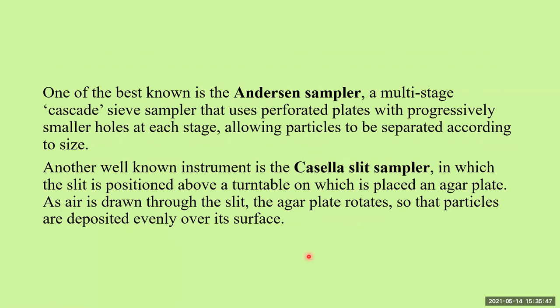One of the best-known impaction samplers is the Anderson air sampler. It is a multi-stage cascade sieve sampler that uses perforated plates with progressively smaller holes at each stage, allowing particles to be separated according to their size. There are six stages with six different plates, placed one above the other. Through the perforations at each stage, bioaerosols enter and are deposited on the surface of the agar plate, with different-sized particles collected at each level.